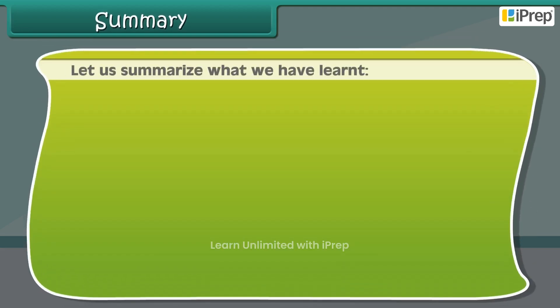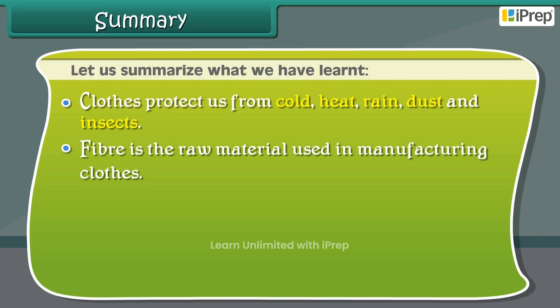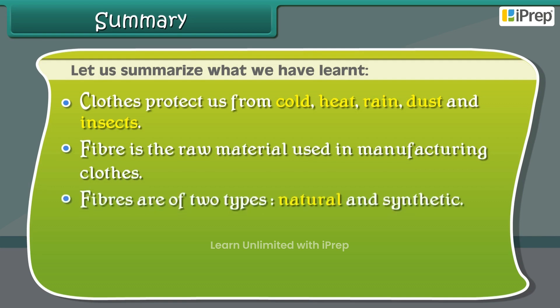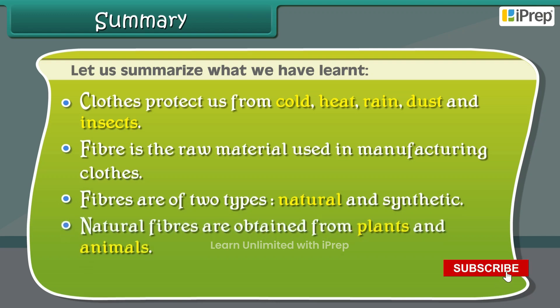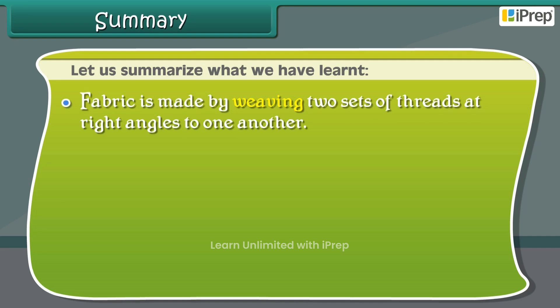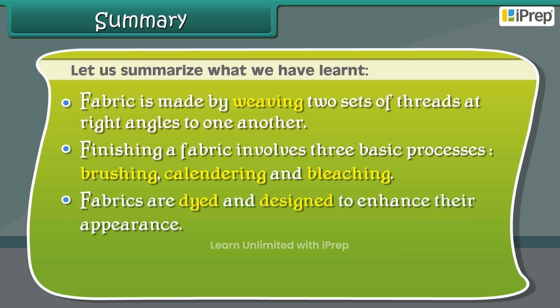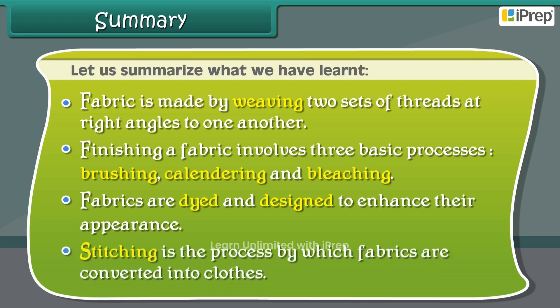Let us summarize what we have learned. Clothes protect us from cold, heat, rain, dust and insects. Fiber is the raw material used in manufacturing clothes. Fibers are of two types: natural and synthetic. Natural fibers are obtained from plants and animals; synthetic fibers are man-made. Fabric is made by weaving two sets of threads at right angles to one another. Finishing a fabric involves three basic processes: brushing, calendering and bleaching. Fabrics are dyed and designed to enhance their appearance. Stitching is the process by which fabrics are converted into clothes.